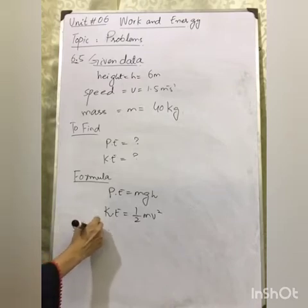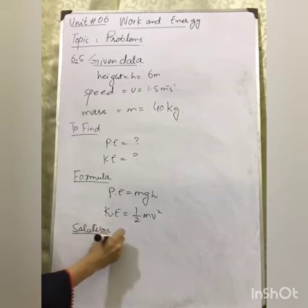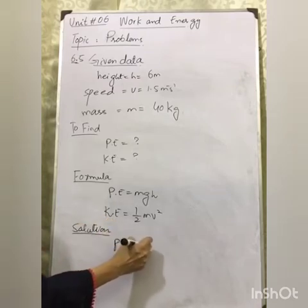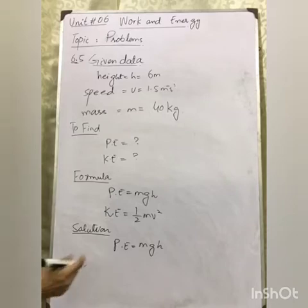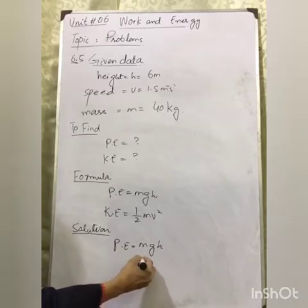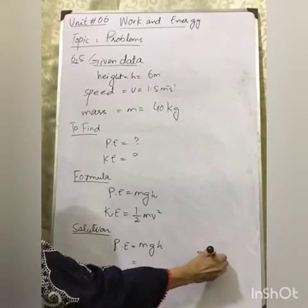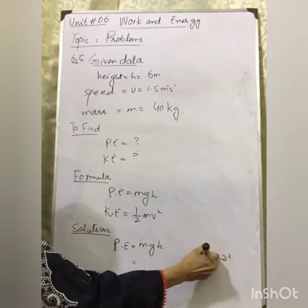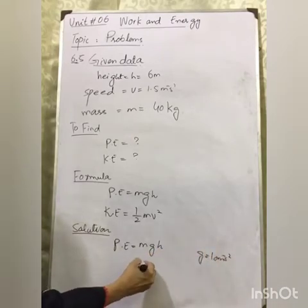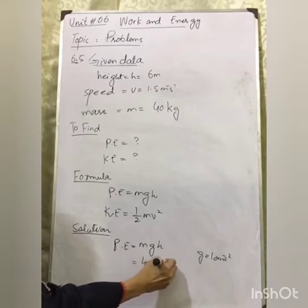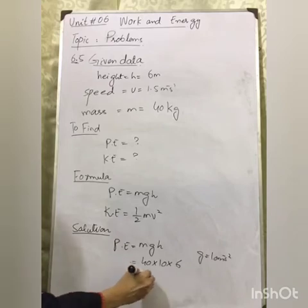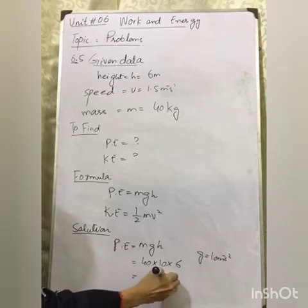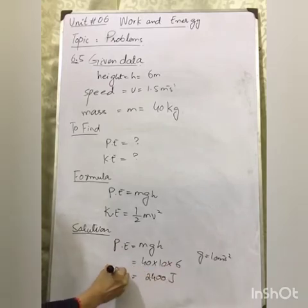Solution. Potential energy is equal to mgh. Mass is 40, G is equal to 10 meters per second squared. So 40 times 10 times 6 gives the answer 2400 Joule.